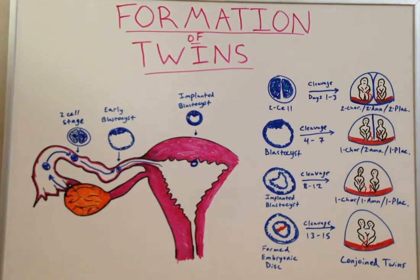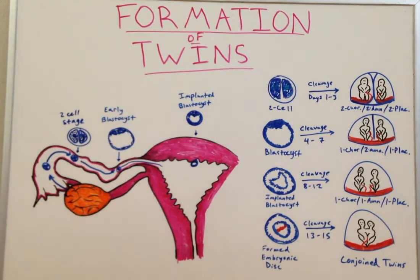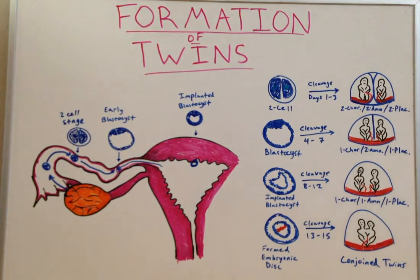Depending on what stage of development the egg splits will determine how independent the twins can be. The sooner that the egg splits, the more independent these twins will become. These splittings can occur at different stages.